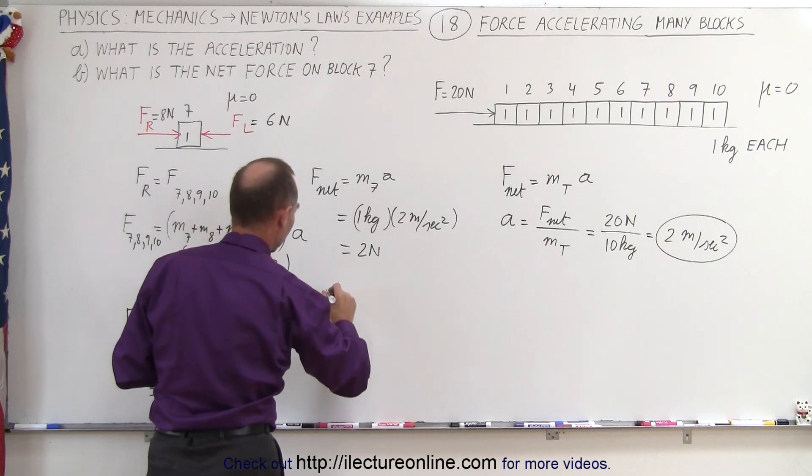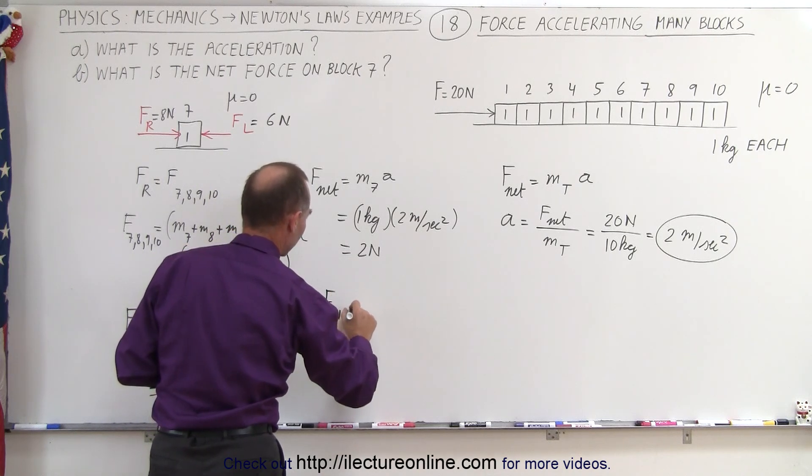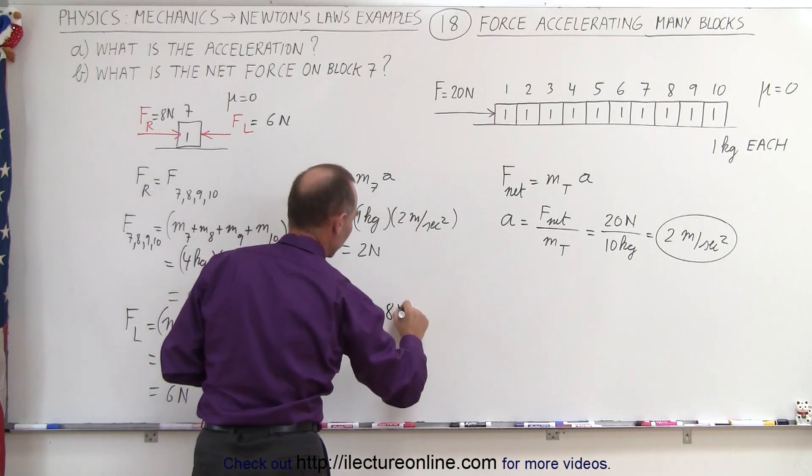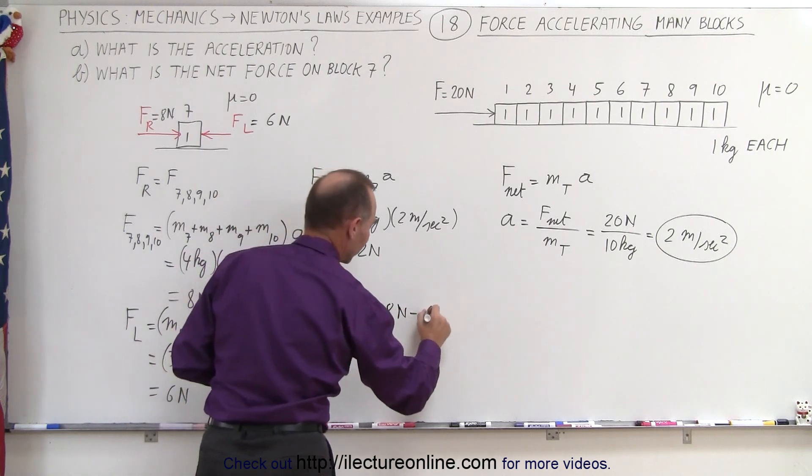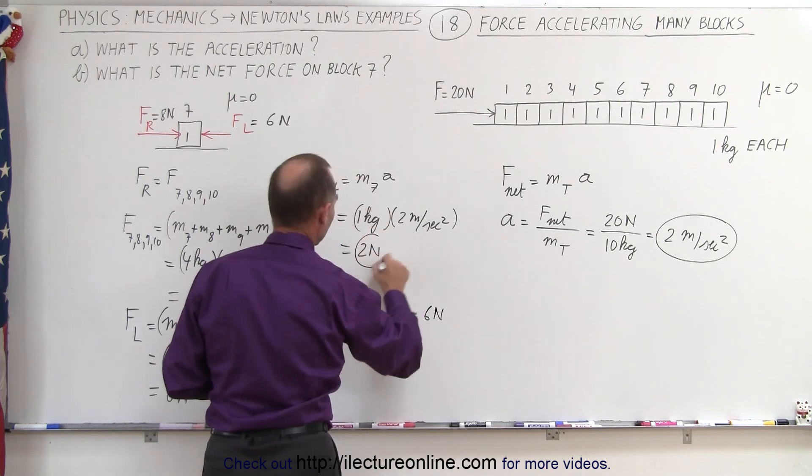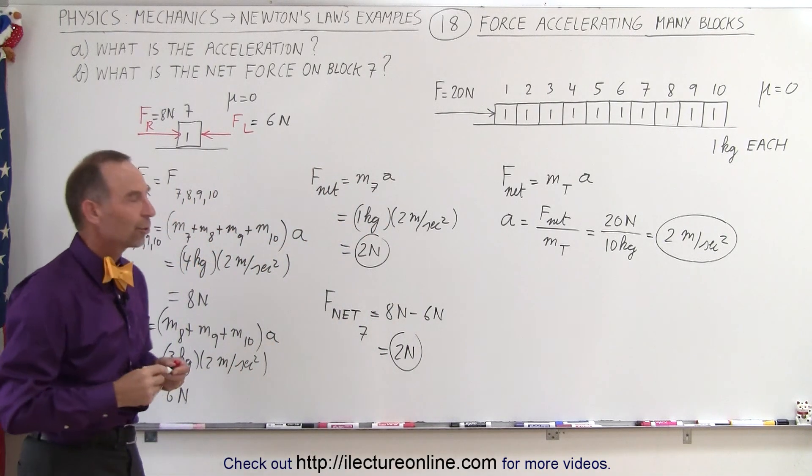And since there's no friction, we can say that the net force on block 7 is equal to the 8 newtons pushing to the right minus the 6 newtons pushing to the left, which is equal to 2 newtons, and so obviously we end up with the same result.